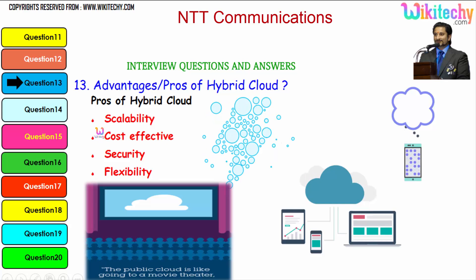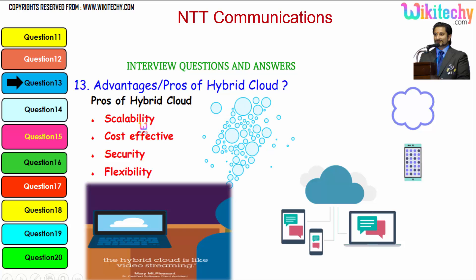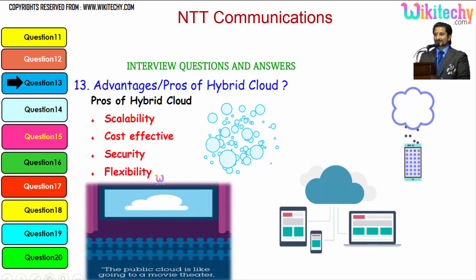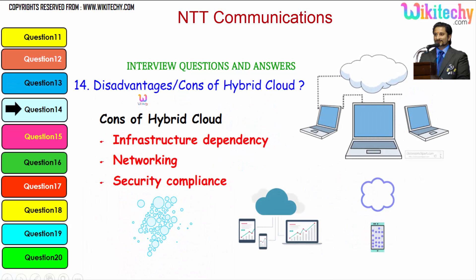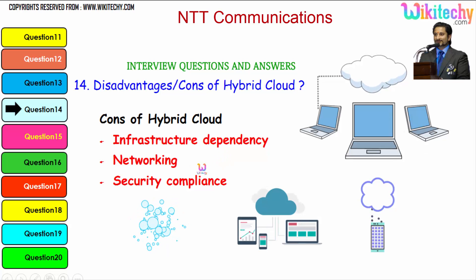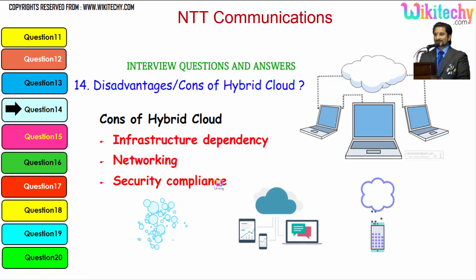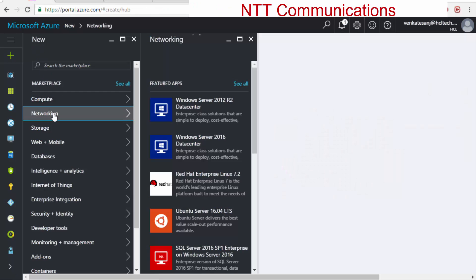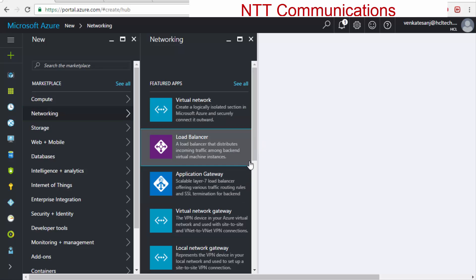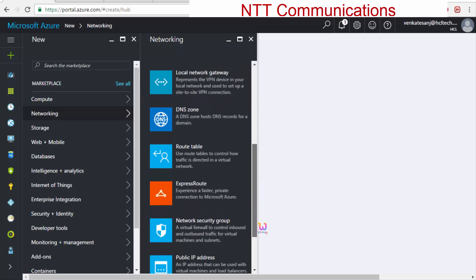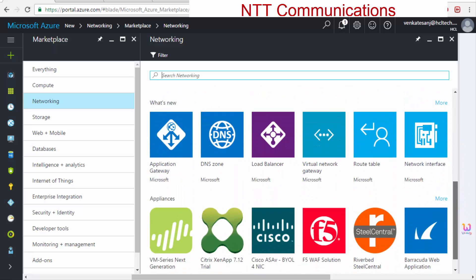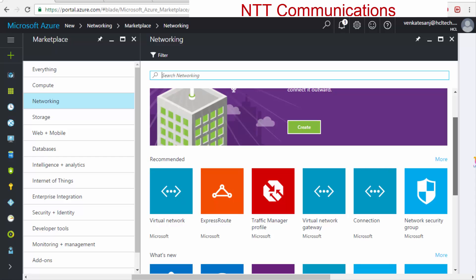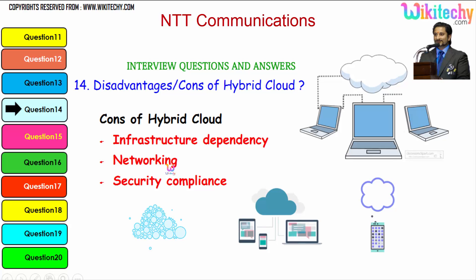Talking about the pros and advantages of a hybrid cloud: it is scalable — you can extend it as much as you can. It is cost effective, secure, and you get more flexibility. These are the major advantages of hybrid clouds. For disadvantages, there are majorly infrastructure dependencies, networking dependencies, and security compliance dependencies. In the private cloud networking, you need a virtual network, load balancer, gateway, local gateway, virtual gateway, DNS zones, route table, public addresses, connections — everything can be dedicatedly configured. In a hybrid cloud, there are many networking-related dependency issues.